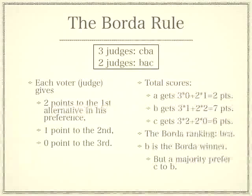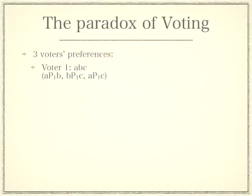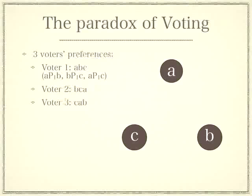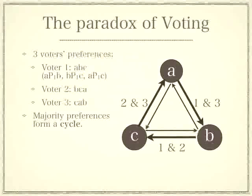Maybe Condorcet's criticism would be appealing if there were always a majority winner — an alternative that beats everything else — but the paradox of voting shows that you can't always find one. Voter 1 has the preference ABC, voter 2 and voter 3 have different preferences. Indicating these preferences on a graph, the result is a cycle: A beats B, B beats C, but C beats A. So for every alternative, there is a majority of voters who prefer another alternative — in other words, there is no maximal alternative.